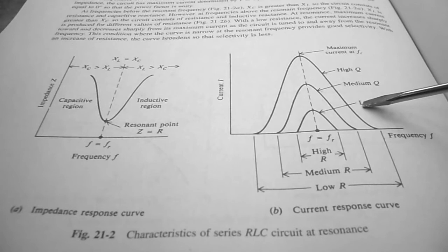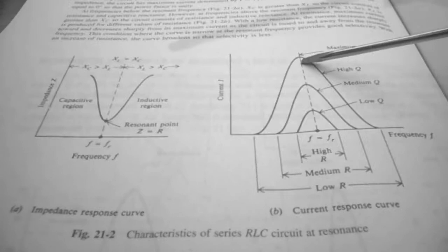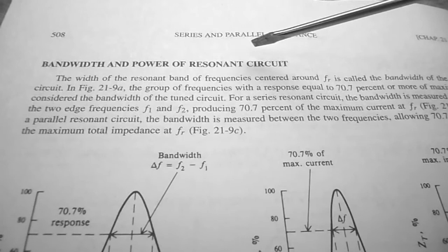When looking at the Q of the circuit, Q is directly related to the resistance of the circuit. We can see a low-Q circuit versus a high-Q circuit. The textbook discusses bandwidth and power of resonant circuits.